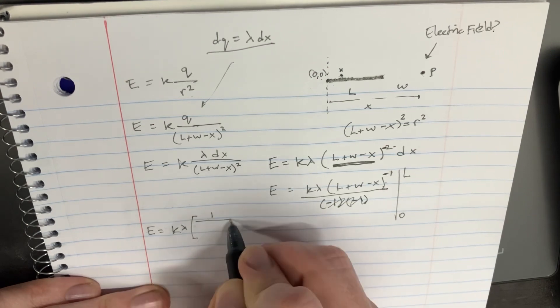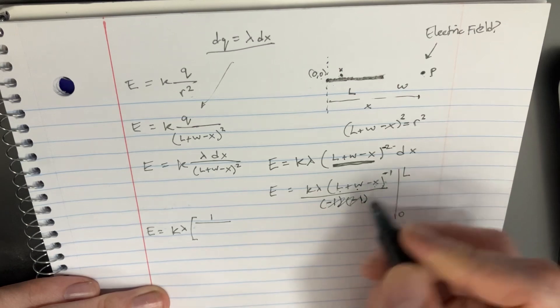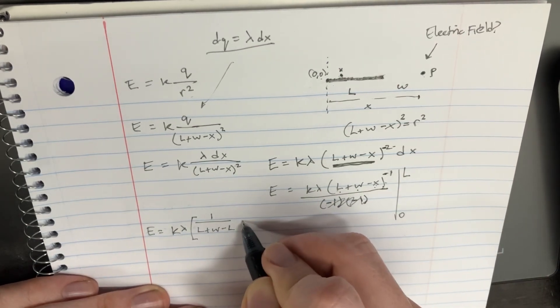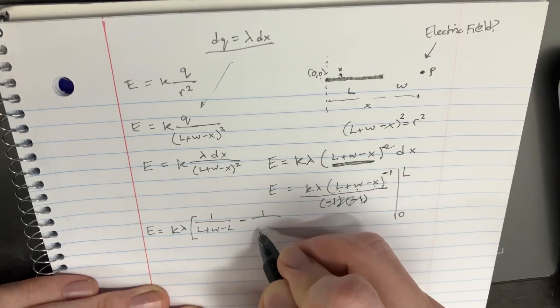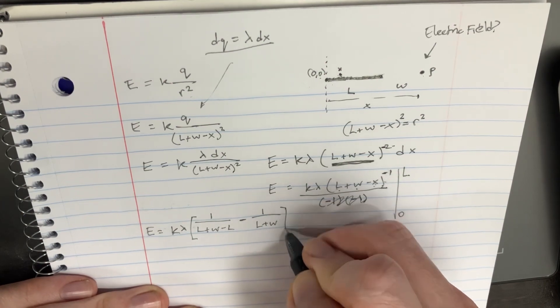So it's going to be 1 over L plus W minus X. But what is X in the first situation? It's L. So it would be L plus W minus L. And then over here, this is going to be subtracted by, you plug in 0 there, so you're going to get 1 over L plus W. There you go.